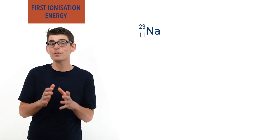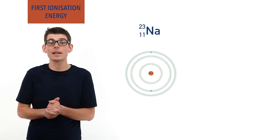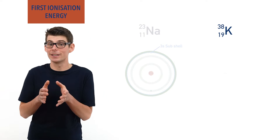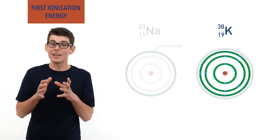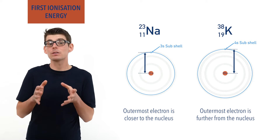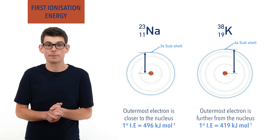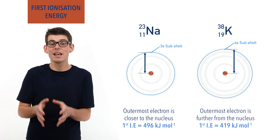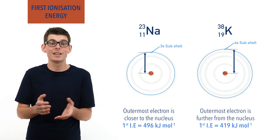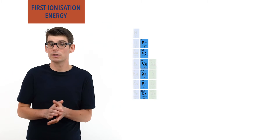For example, sodium has 11 protons in its nucleus, giving it an 11+ charge and two inner electron shells, meaning the outermost electron is in a 3s orbital. Potassium has 19 protons, giving it a 19+ charge, but three inner electron shells, meaning the outermost electron is in a 4s orbital — much further from the nucleus than for sodium. As a result, potassium has a lower first ionization energy (419 kJ/mol) than sodium, because even though it has a greater positive nuclear charge, the increased distance between the nucleus and outermost electron gives a lower strength of attraction, making it easier to remove the outermost electron. Because of this, as you go down a group, the first ionization energies of the elements decrease.